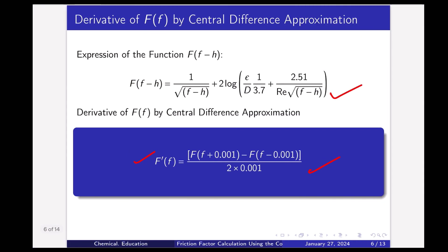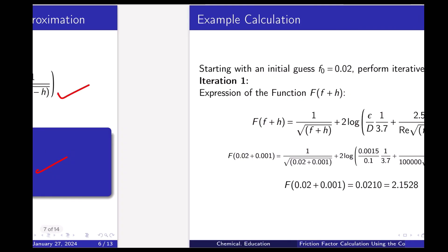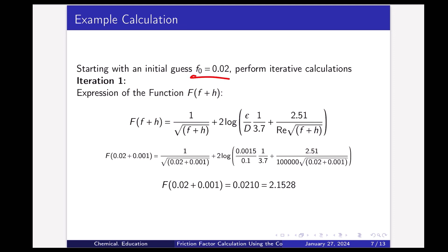We don't know the value of f yet, so we take an initial guess f₀ = 0.02. Based on that, we calculate the function values. Plugging in ε = 0.0015, d = 0.1, and Re = 100,000, we get F(0.02 + 0.001) = F(0.021) = 2.1528.